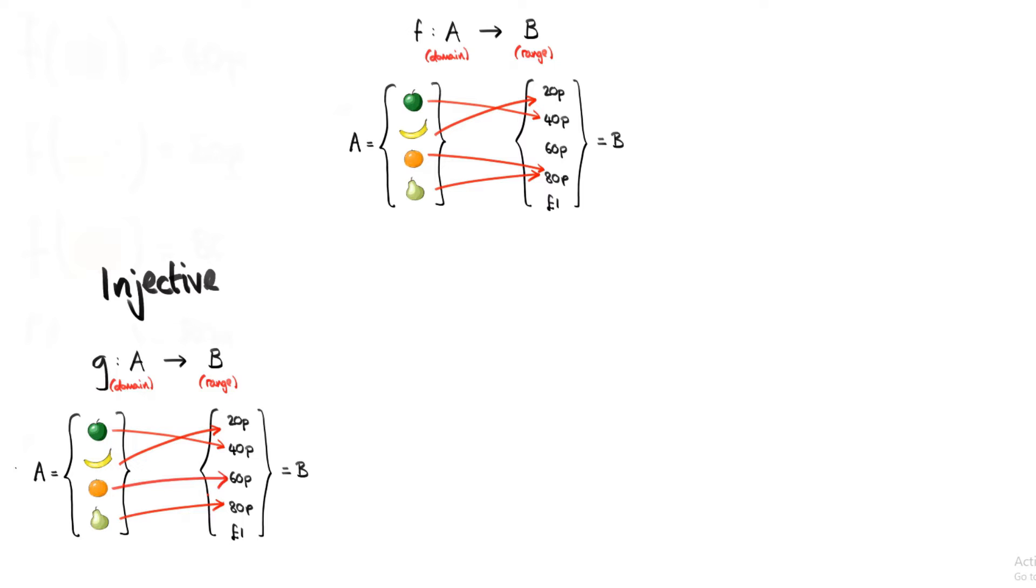Functions are usually denoted by the letter f, just because it's easy to remember that it stands for function. But once we've used the letter f, we need to come up with another letter. So g is a perfectly fine letter to use for a function. So now we have a function g that's still going from sets A to B, except where g of orange is now equal to 60p.